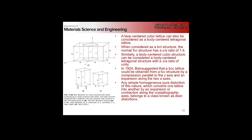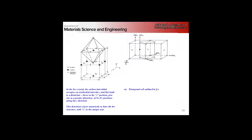The Bain distortion is useful for visualizing how much the atoms change position, but it is not an actual mechanism by which martensite can form. A pure Bain distortion doesn't leave any invariant planes — it doesn't preserve the habit plane of martensite. It's a useful analogy for seeing how little you actually need to change each atom's position relative to its neighbors, but it's not a mechanism.